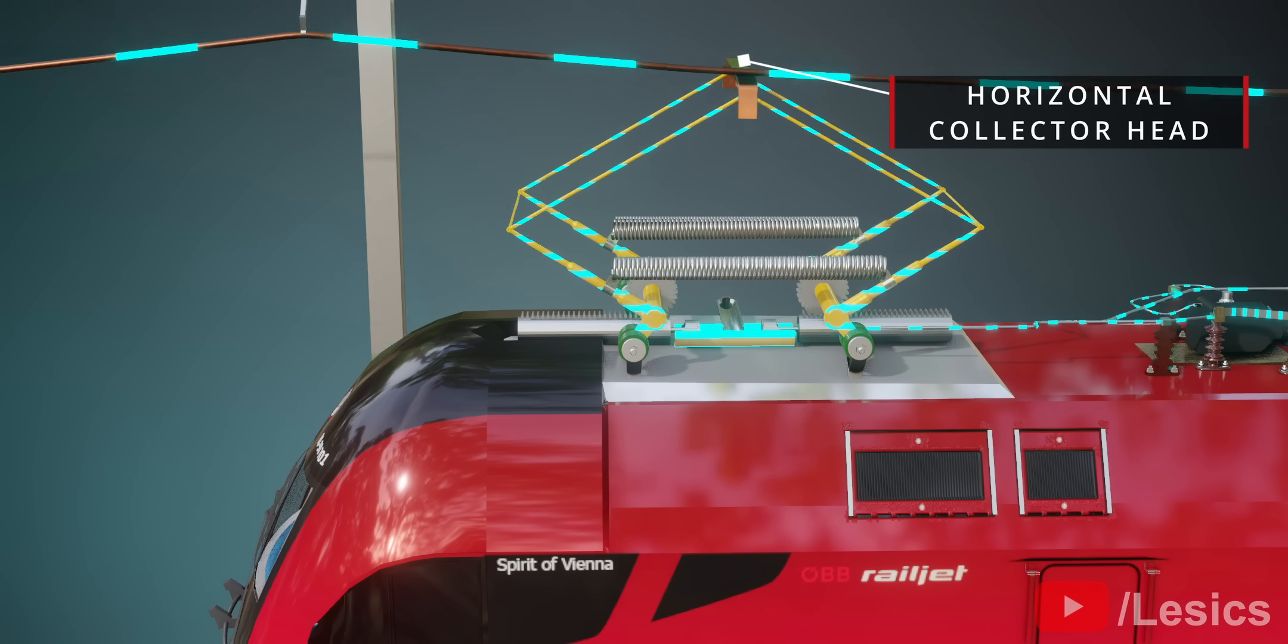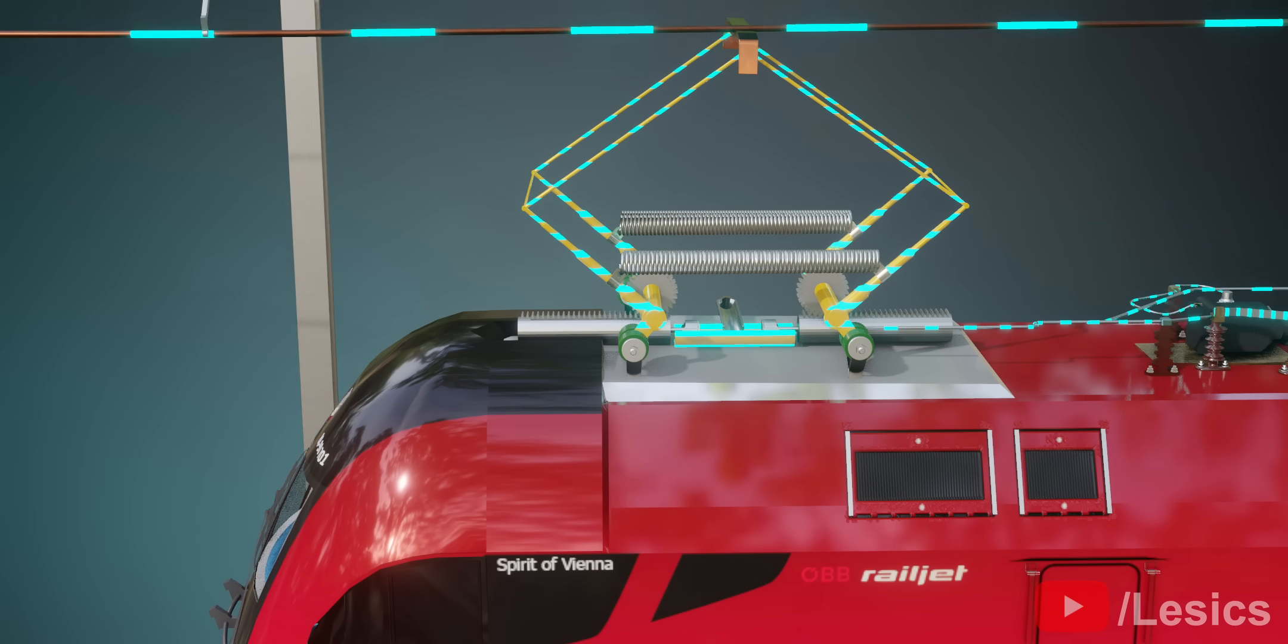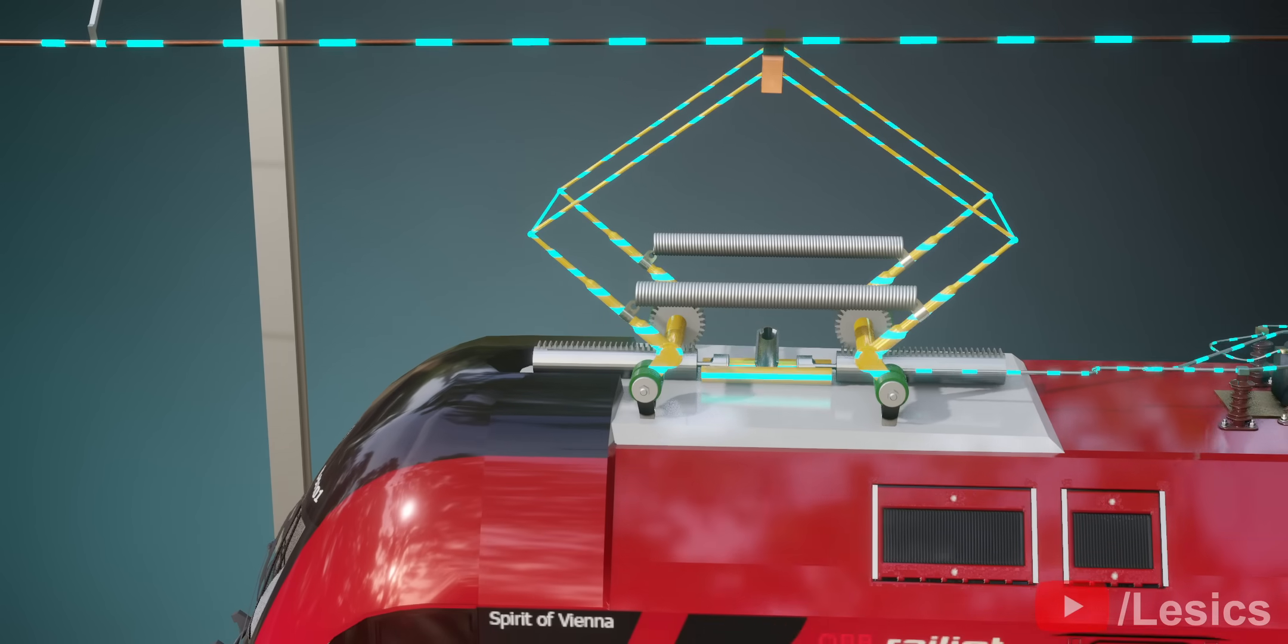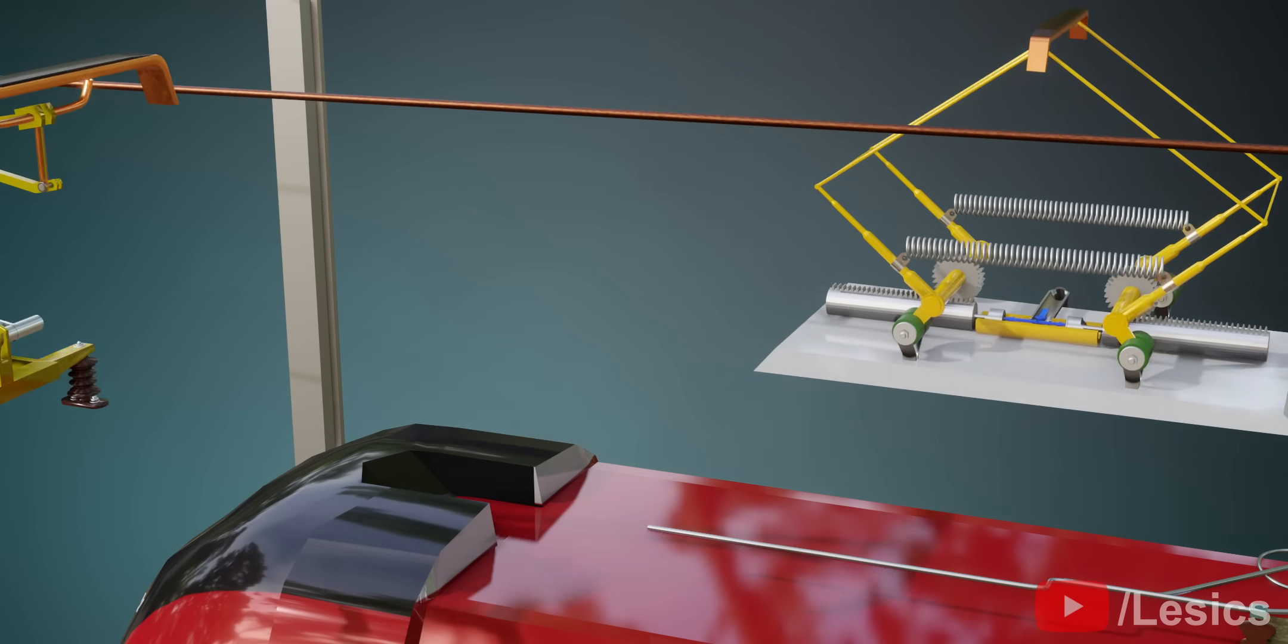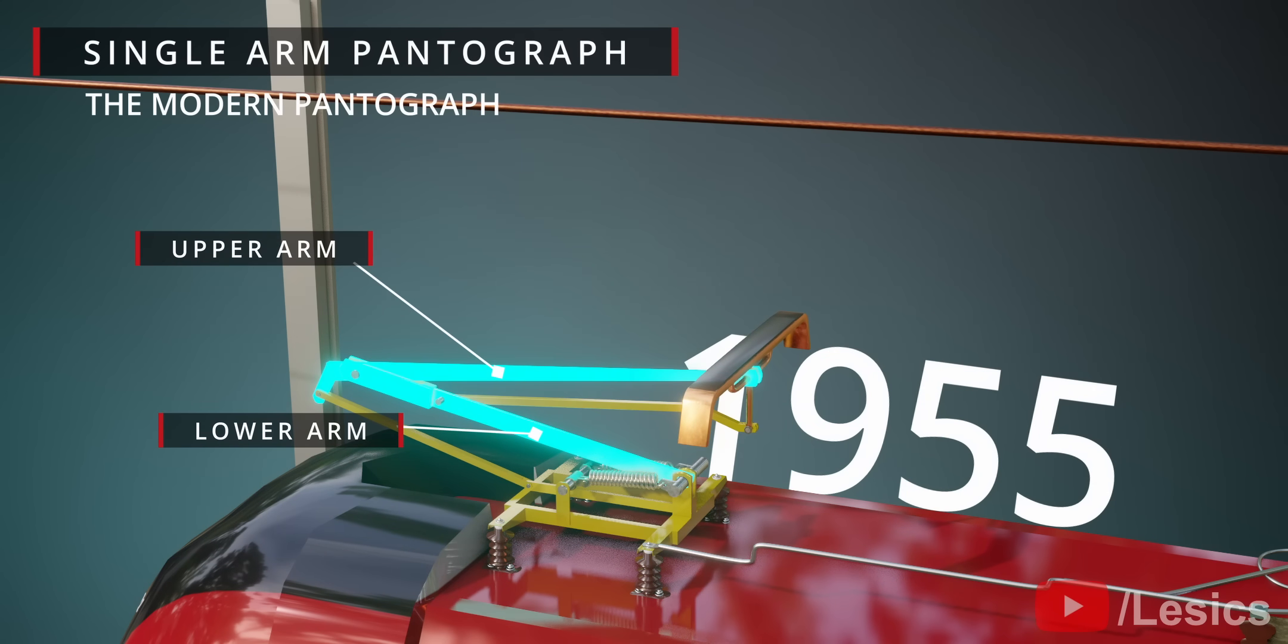However, because the two-arm pantograph is bulky and heavy, it requires significant power to raise and lower. To address this problem, Mr. Lewis Faveley introduced a new technology: the single-armed pantograph. The main parts of this pantograph are marked here.